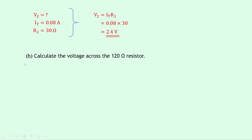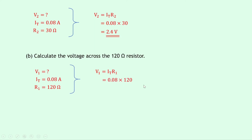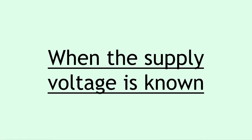Part b asks for the voltage across the 120 ohm resistor. The longer method: V1 equals IT times R1 equals 0.08 times 120 equals 9.6 volts. Or the quicker method using the series voltage rule: V1 equals VS minus V2 equals 12 minus 2.4, which also equals 9.6 volts.